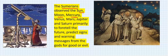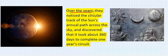They observed the moon, Mercury, Venus, Mars, Jupiter, and Saturn, seven of them, primarily to foretell the future, predict signs and warning messages from the gods for evil or good. This observation lasted for generations. However, over the years they noticed the circular track of the sun's annual path across the sky.